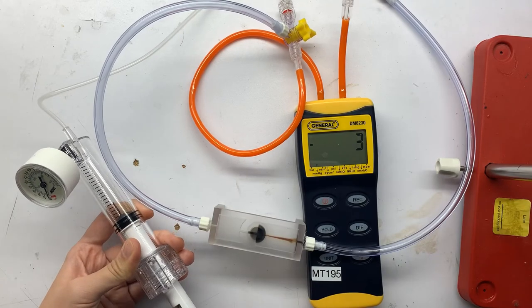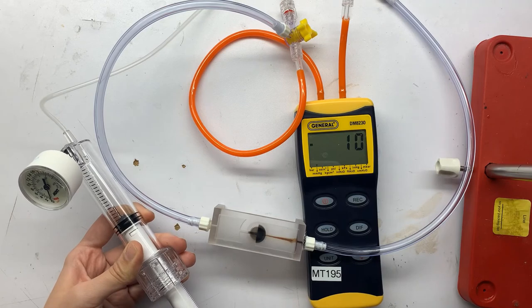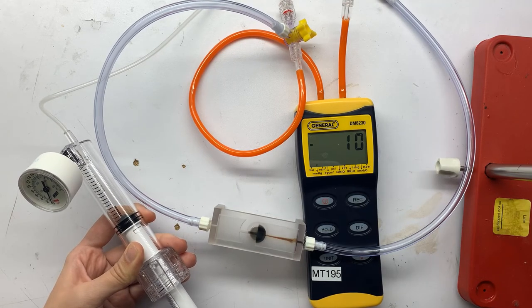Now we're pushing fluid from the left side to the right side. We start with 2 and end with 10, so our cracking pressure here is 8 millimeters of mercury.